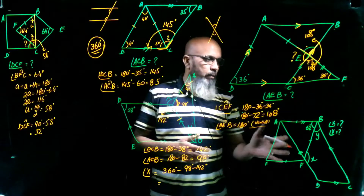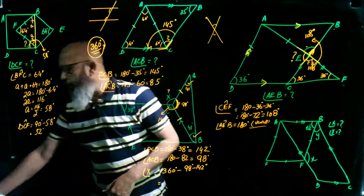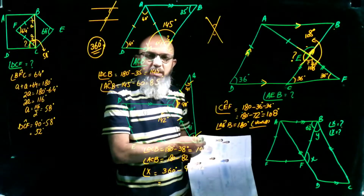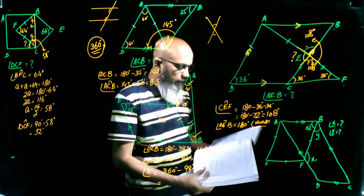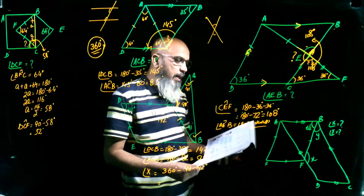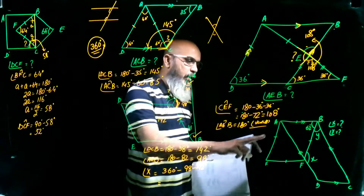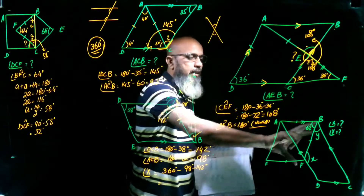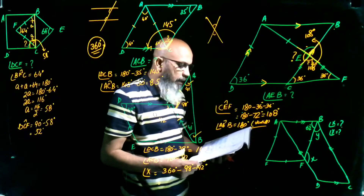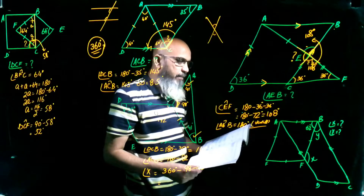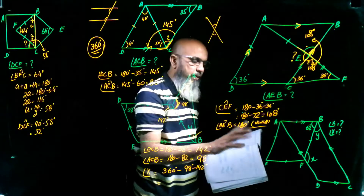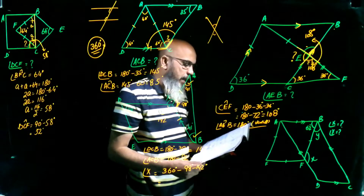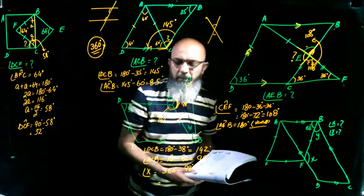The last question: ABCD is a parallelogram and ABEF is a rhombus. Two angles are given and we need to find unknown angles X and Y. In rhombus ABEF, triangle ABE has two equal sides, so its base angles are equal. Using the triangle angle sum: B + B + 62 = 180, so 2B = 118, and angle B = 59 degrees.